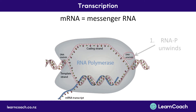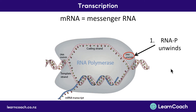The whole process works like this: a protein called RNA-P unwinds your DNA, separating the two strands, so T gets separated from A and C gets separated from G.